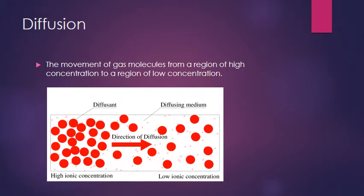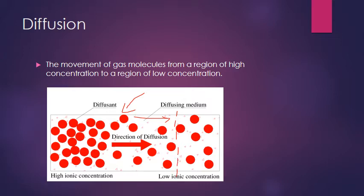Diffusion is the movement of gas molecules from a region of high concentration to a region of low concentration. You need to know this definition because it will likely be asked in an exam. Simply put, all these gas molecules — whether oxygen or carbon dioxide — want to move to where there are fewer particles to even out the spread. Don't confuse this with osmosis from GCSE biology: osmosis is the same concept but involves the movement of particles through a semi-permeable membrane.